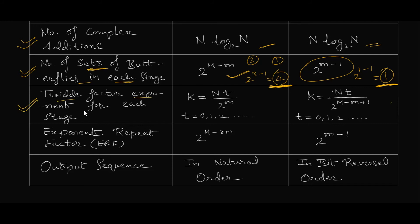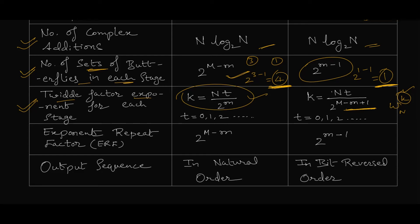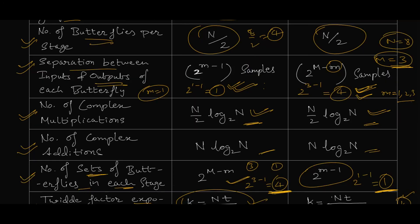Next is calculation of the twiddle factor exponent — we write the twiddle factor as W_N^k, so k is determined here. The process of determining twiddle factors is the same as for DIT, but the formula differs. The number of k values per stage is determined by the separation between inputs and outputs. If separation is 1 sample (DIT stage 1), only one twiddle factor is needed: t=0. But for DIF stage 1 with separation of 4 samples, we calculate for t = 0, 1, 2, and 3.